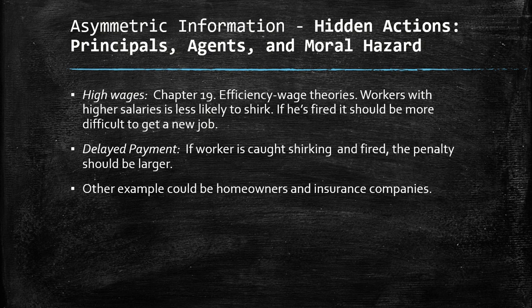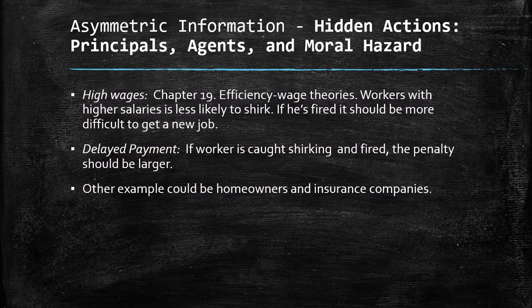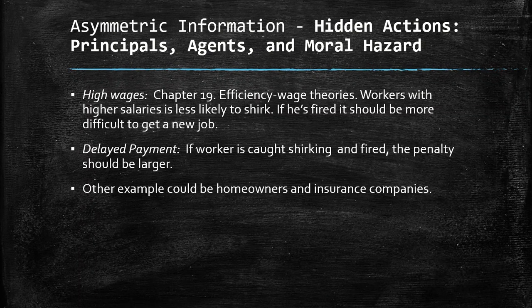In the homeowners and insurance company example, the homeowners are the agents because they are the informed party — they know if they take care of their houses, whether they have fire protection or hurricane protection. But the insurance companies definitely don't have access to that information, so they are the uninformed party. The homeowners may take advantage of that situation to make some benefits not reflected in the premium they are paying for the insurance.